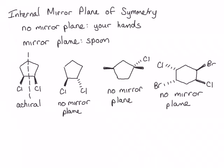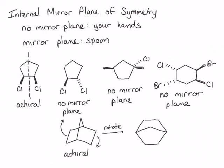We'll do one last example. Consider this molecule, which consists of two fused cyclopentane rings. You may find it useful to pause the video and make a model to determine whether or not it contains a mirror plane of symmetry. This molecule does contain a mirror plane of symmetry, making it achiral. This is easiest to see if we rotate the molecule so that one bond goes to the top and another to the bottom — now it's much easier to see the mirror plane going right down the center.